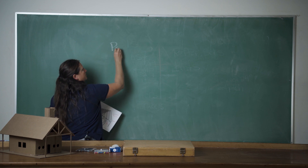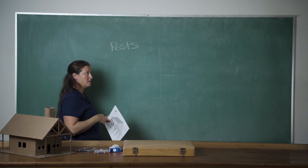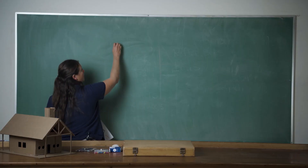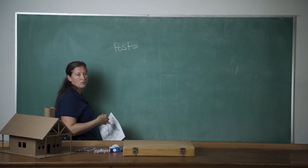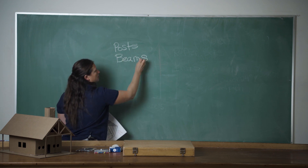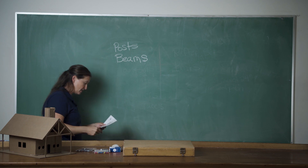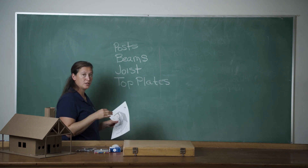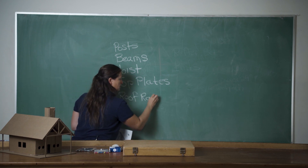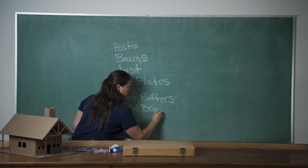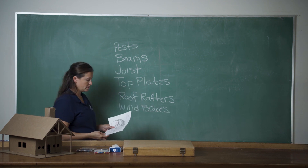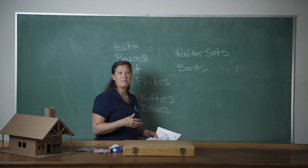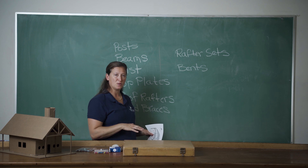Our posts are easy to remember because the grain runs vertically when they are in position. We have our beams — the grain runs horizontally when they are in position. We have our floor joists. We have our top plates, which our roof rafters are sitting on. We have our roof rafters and our wind braces. And then for the actual assembly process, we have rafter sets and we have our bents. Remember, the bents are comprised of our three posts and our carrying beam, which we assemble on the ground and lift up into position.